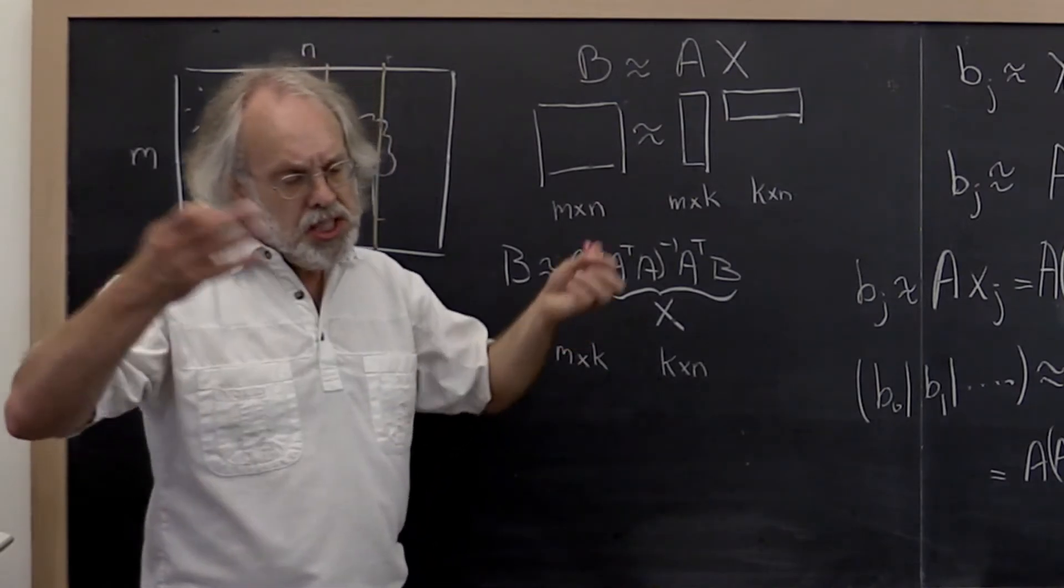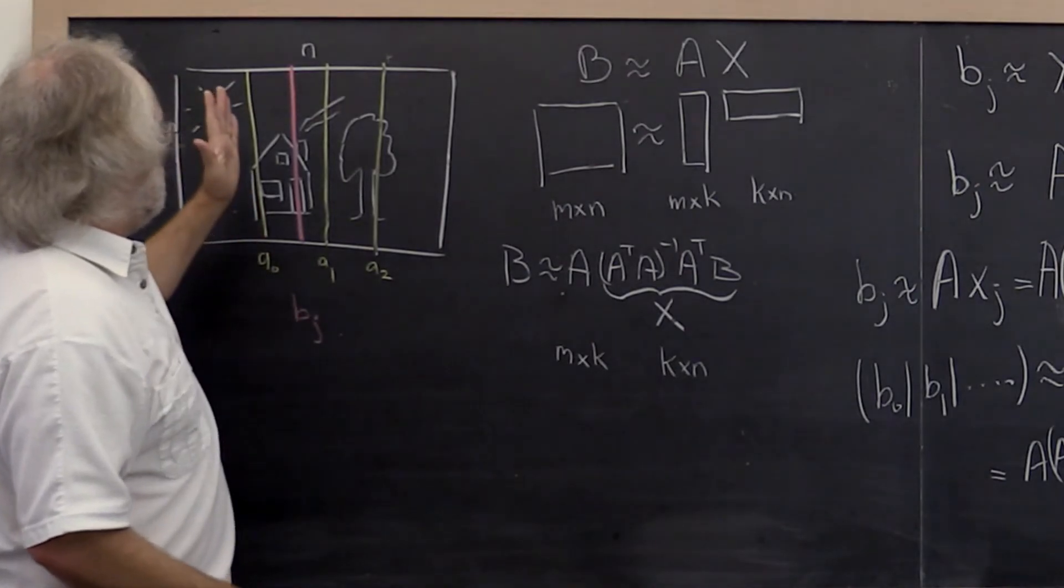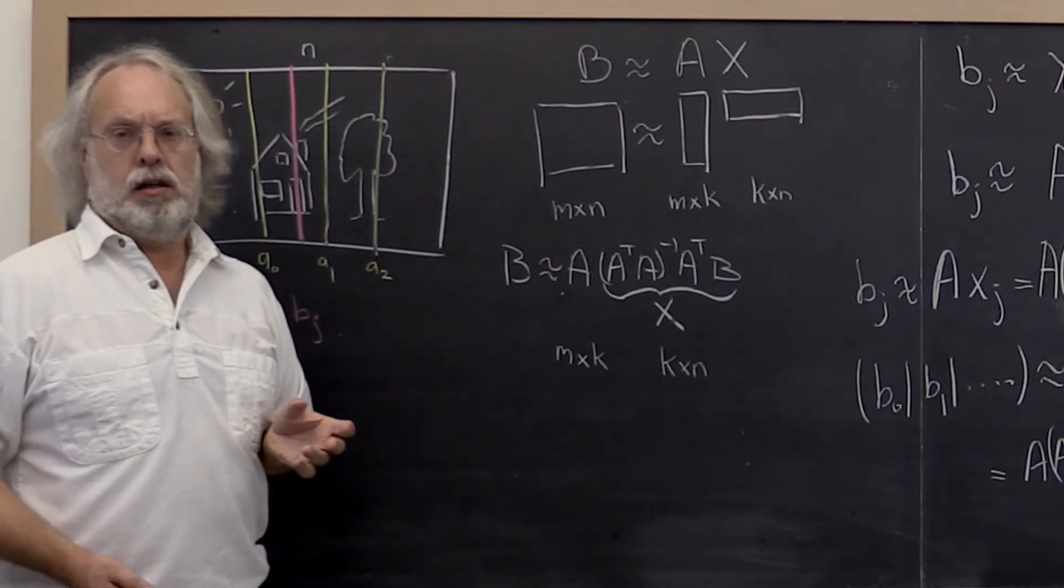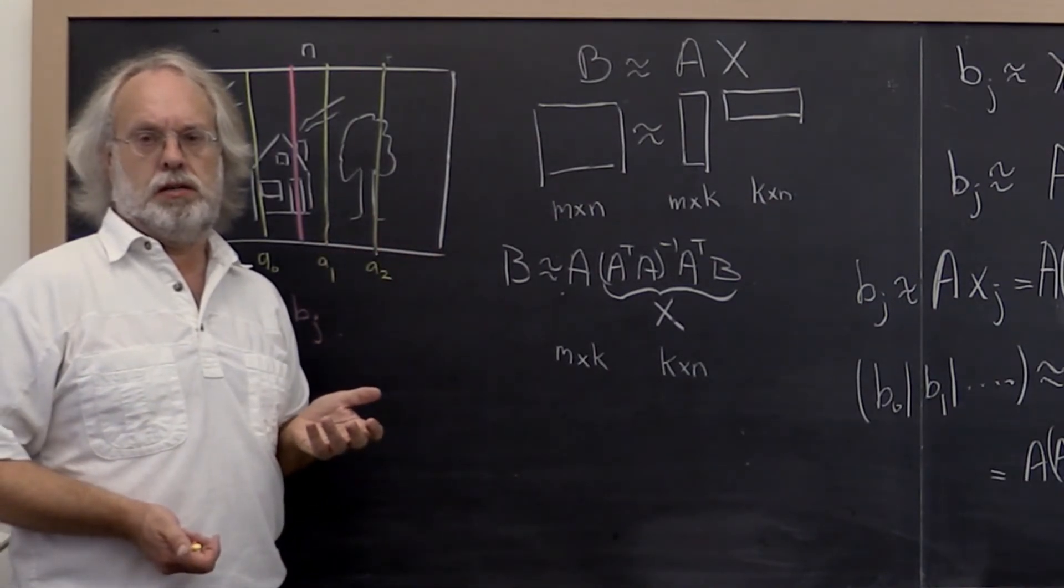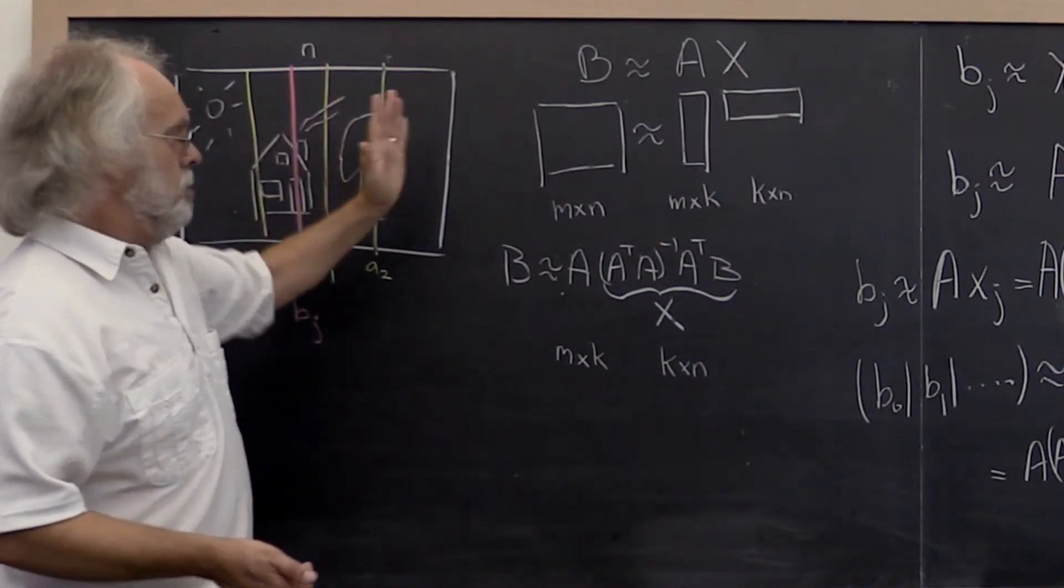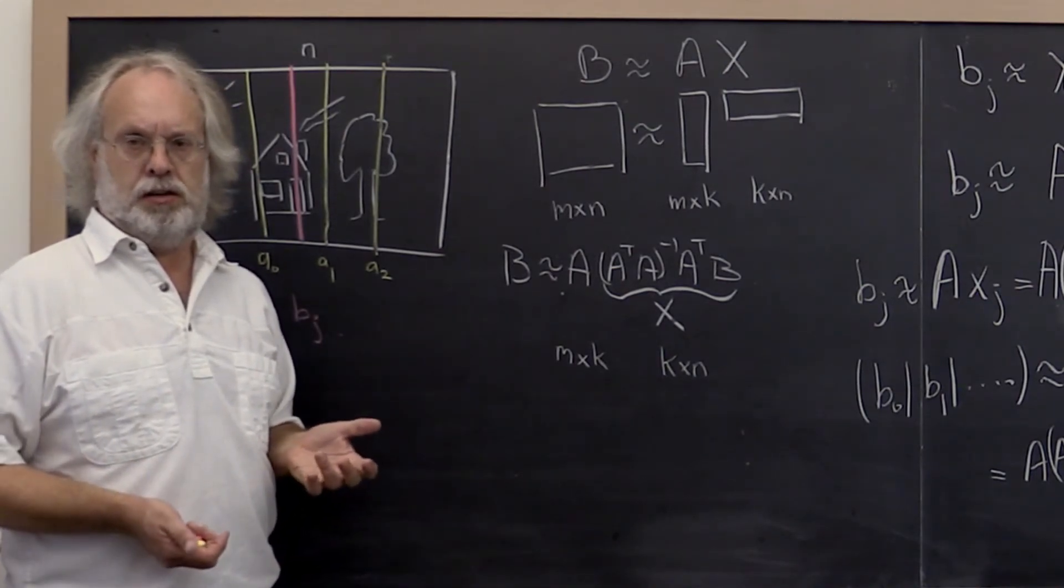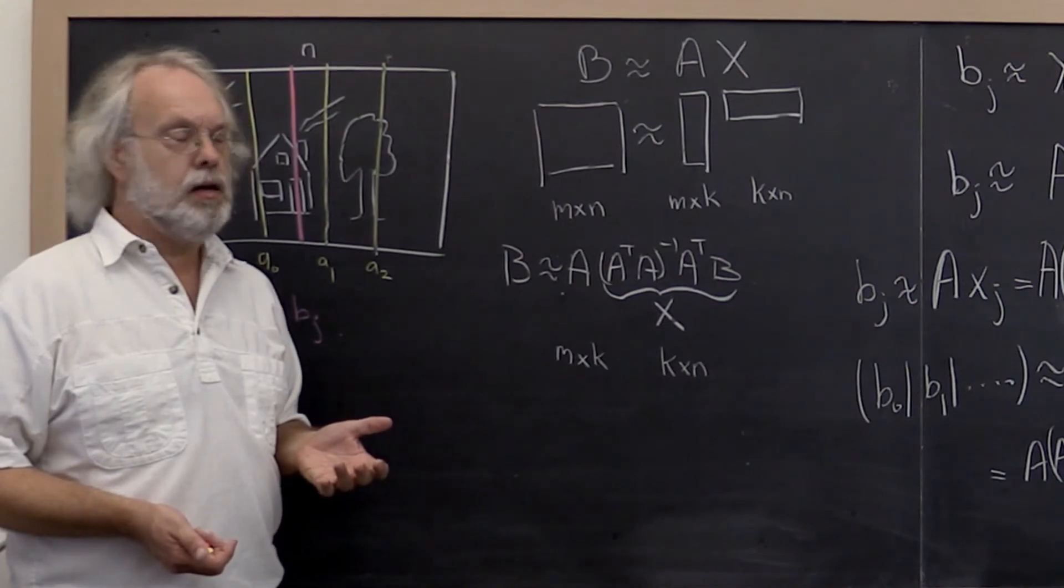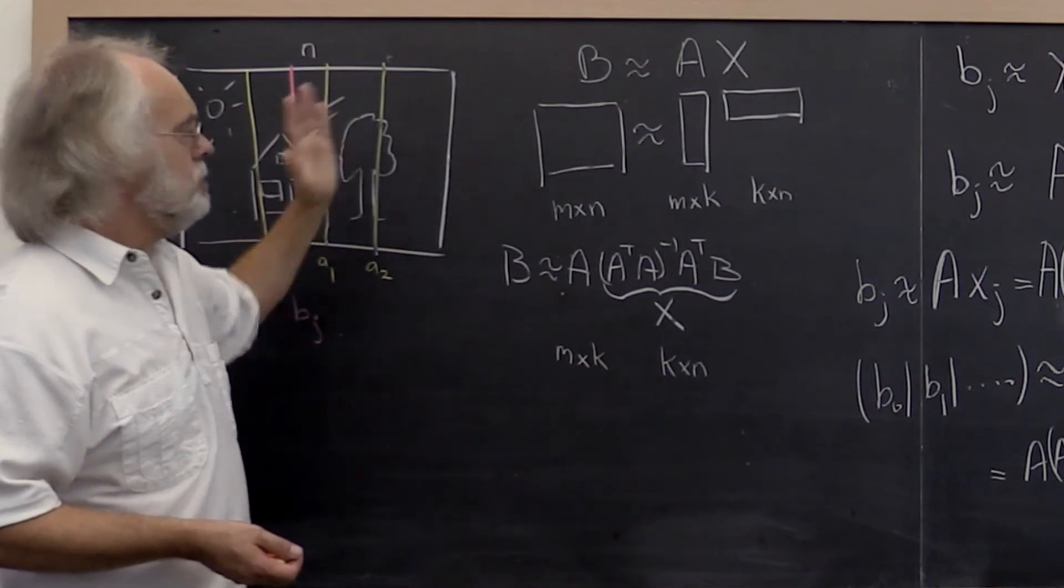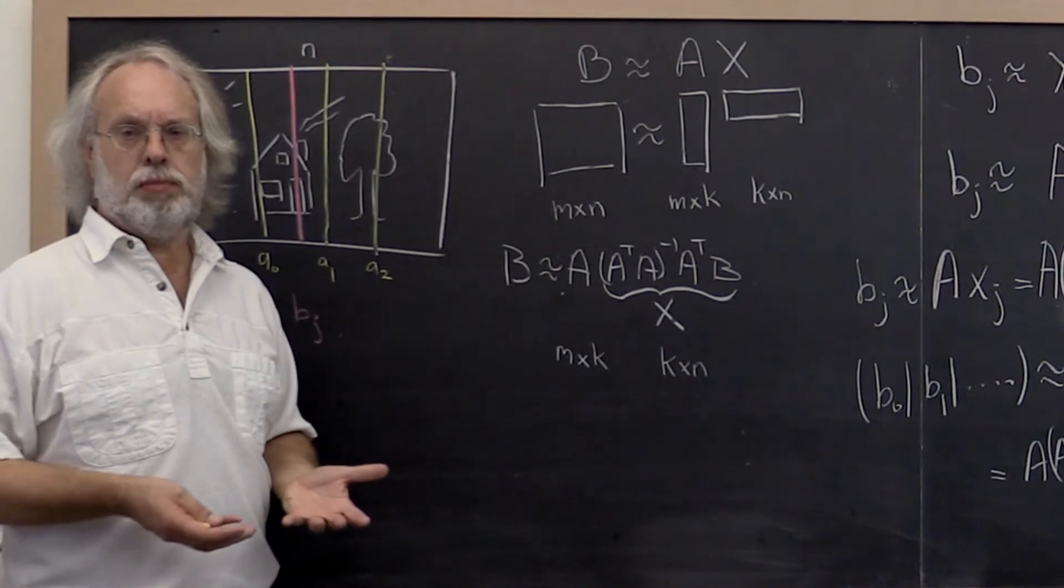Now you can say, it would seem to me that there must be optimal columns in my picture that I can pick to get the best approximation. And then you might say, it would seem like how many columns I pick would influence how accurate of an approximation I get. And then you might say, what might happen if I don't choose my columns from the original picture but I just allow them to be anything? Maybe I can get an even better approximation.